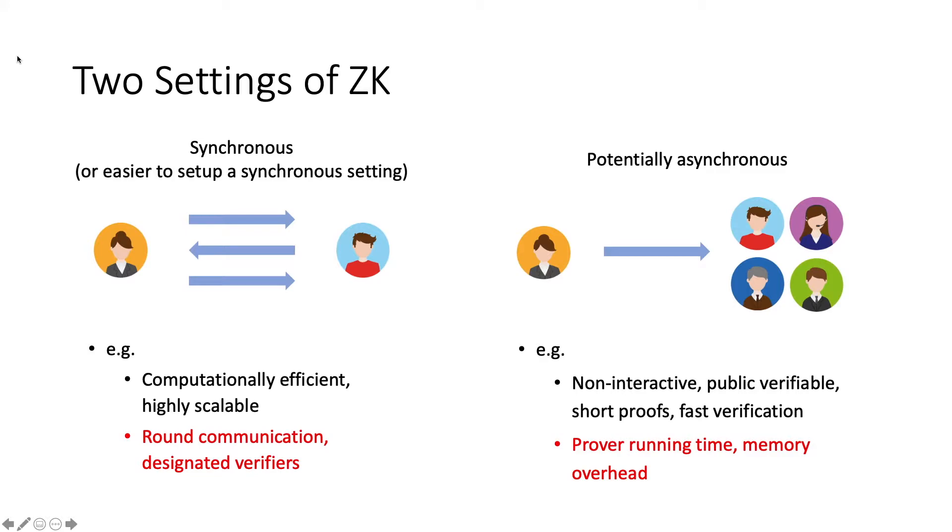Basically, there are two settings of zero-knowledge proof. The first are synchronous protocols or protocols which are easier to be set up as a synchronous setting. These protocols are usually interactive. They are computationally efficient and highly scalable, but usually they suffer from round communications and need designated verifiers. Another kind of protocols are potentially asynchronous. They can be made non-interactive and public-verifiable. They tend to be succinct with short proofs and fast verification. But their drawback is to have the long proof running time and large memory overhead, which is proportional to the circuit size. Our protocol falls into the first category.